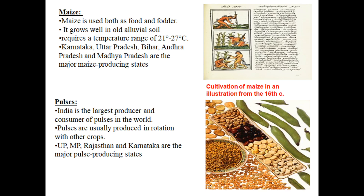Now we talk about pulses. Pulses are the major source of protein for the poor people of India since ancient times. India is the largest consumer of pulses in the world. Pulses are grown in rotation with other crops because they help restore nitrogenous fertility of the soil. Uttar Pradesh, Madhya Pradesh, Rajasthan, and Karnataka are the major pulse producing states.